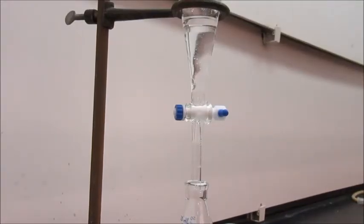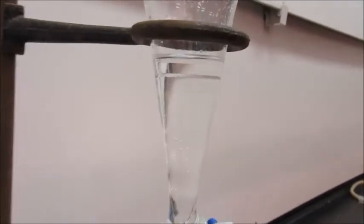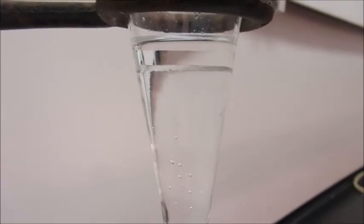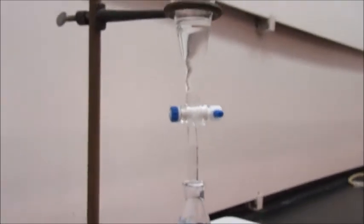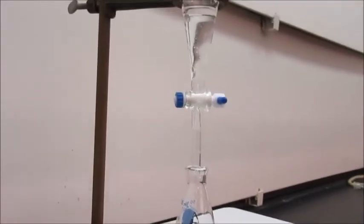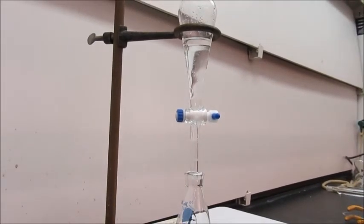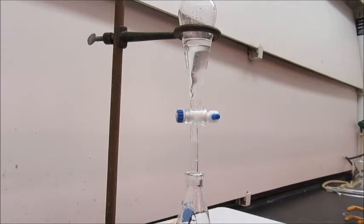I gave that a minute or two to settle. And hopefully you can see there are two layers in here. So I'm now going to separate those two layers. Again, I'm putting the aqueous in flask A, which you should be able to see there.